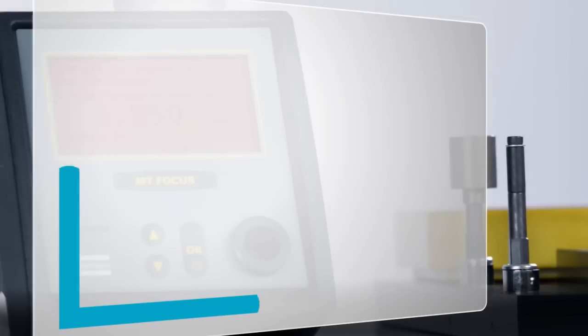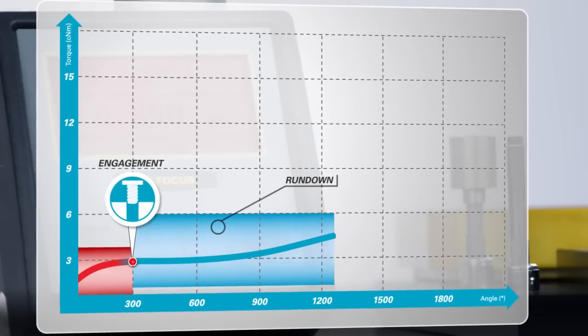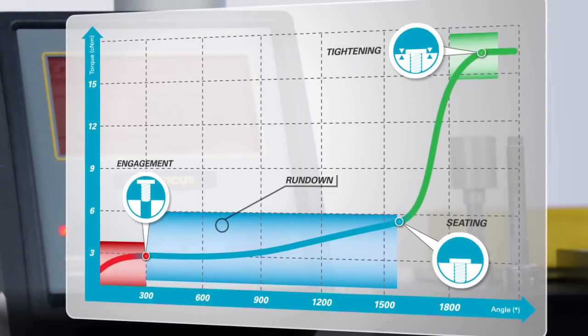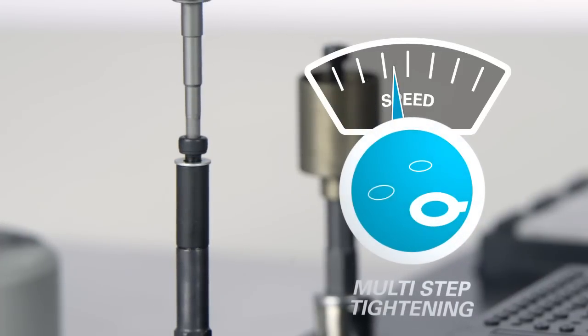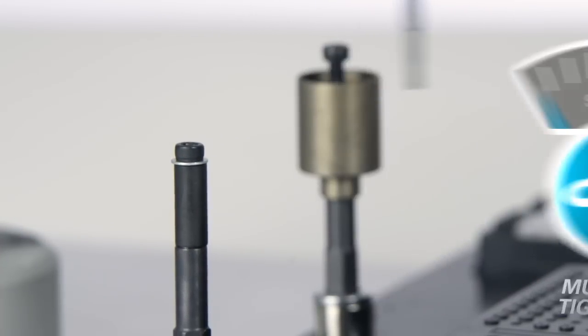Choose your strategy and set up. The three-step tightening strategy defines speed, torque and angle parameters for each step. Perfect engagement, rundown and tightening gives you full process control and short cycle times.